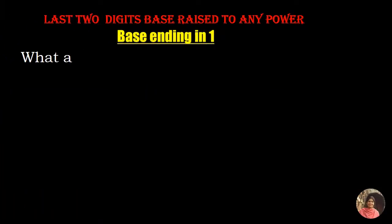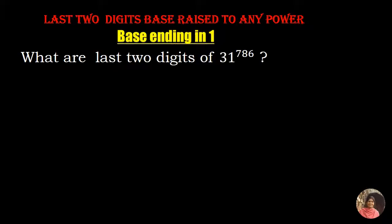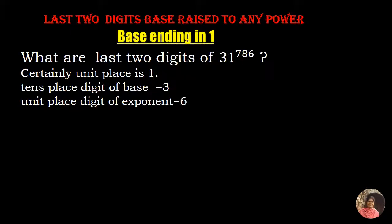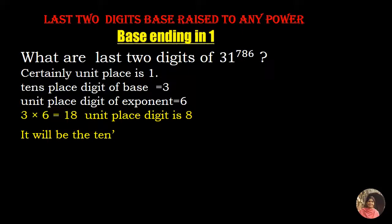Let us take another example. What are the last two digits of 31 raised to the power 786? Certainly the unit's digit is 1. Now tens digit of the base is 3, and unit's digit of the exponent is 6. So 3 multiplied by 6 is equal to 18. The unit's digit is 8. So last two digits of 31 raised to the power 786 is 81.